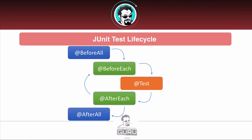Now let's talk about the JUnit test lifecycle. When tests run, the @BeforeAll annotation runs first for the whole class. Then for each test method: @BeforeEach runs, the individual test method runs, and @AfterEach runs — this loops over and over for every test method in the class. Once all tests are exhausted, @AfterAll is executed. It's important to keep this lifecycle in mind, as it gives you a lot of control over setup and teardown functionality.